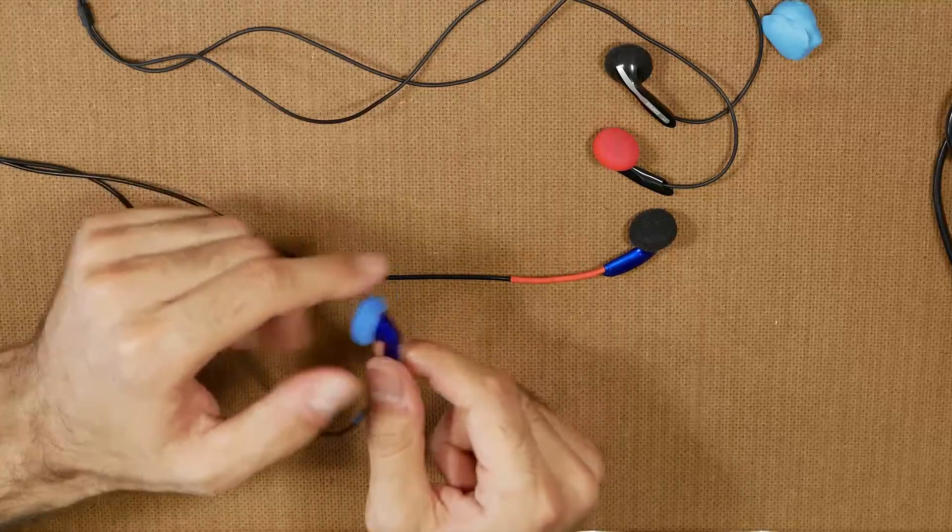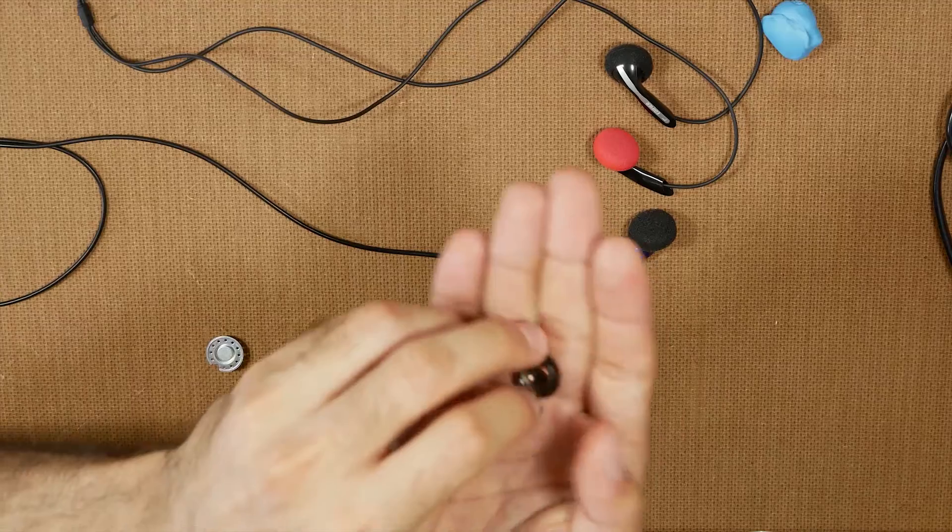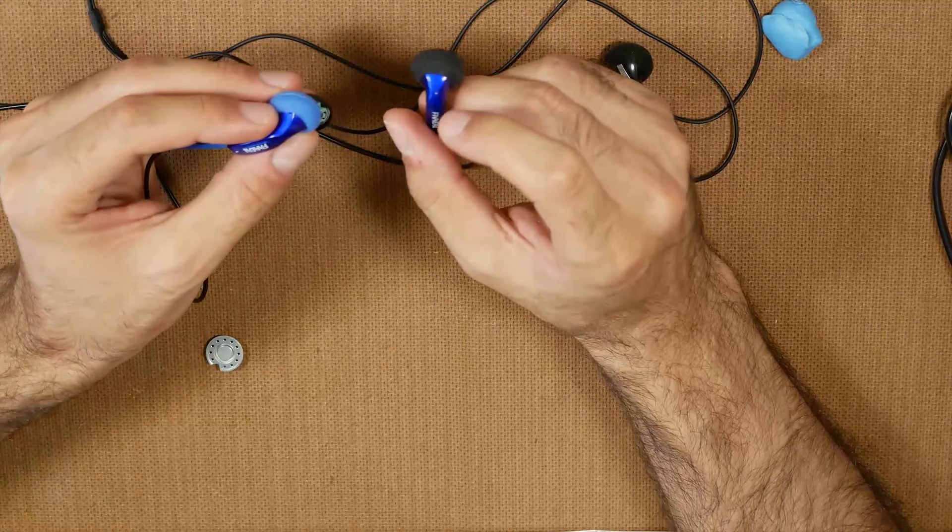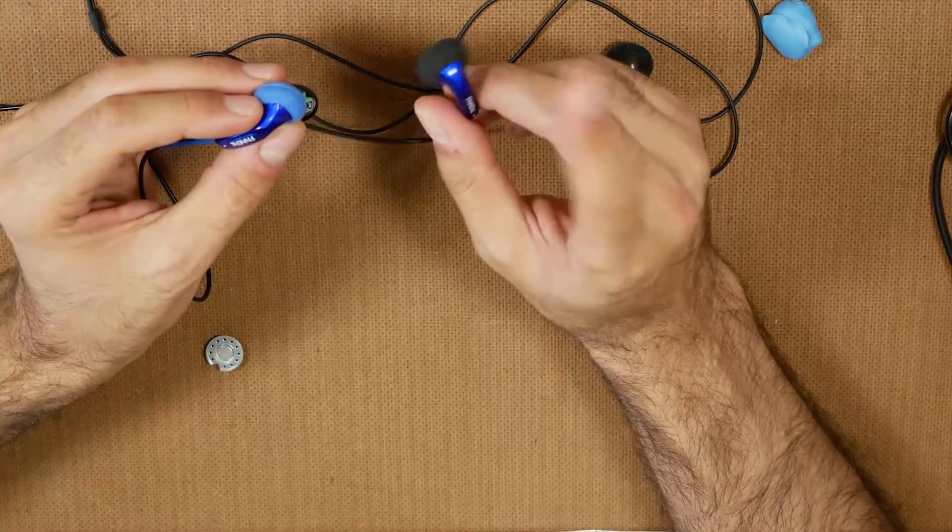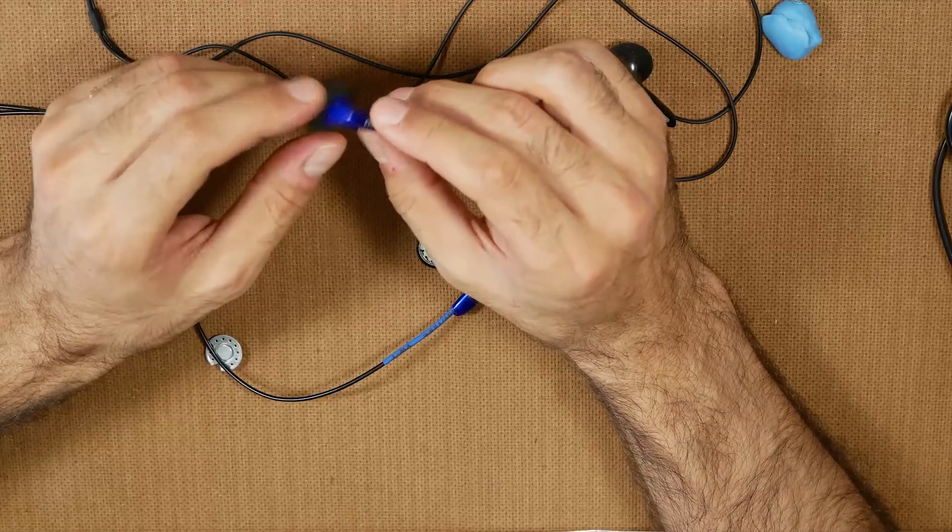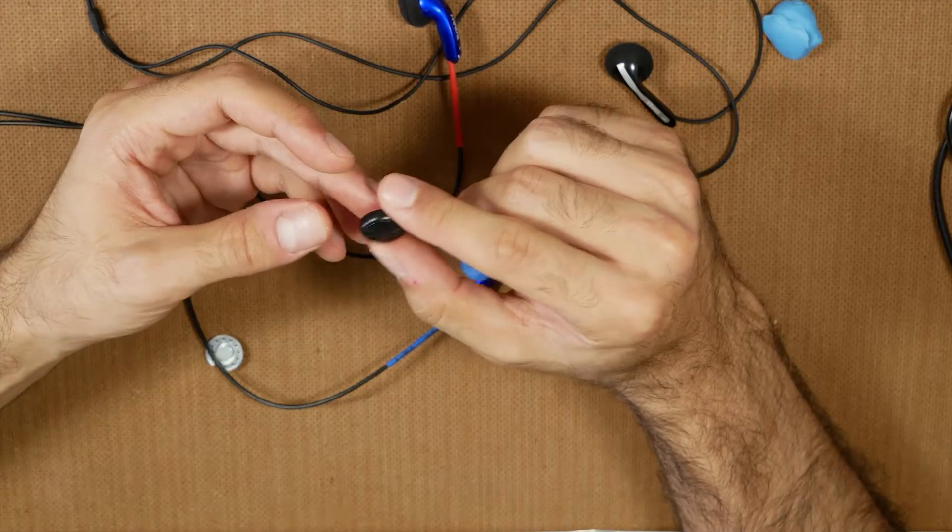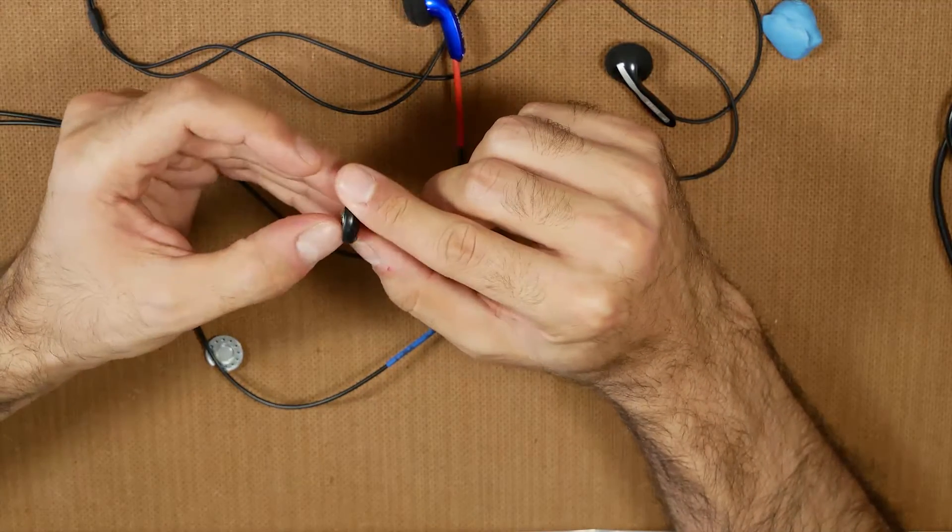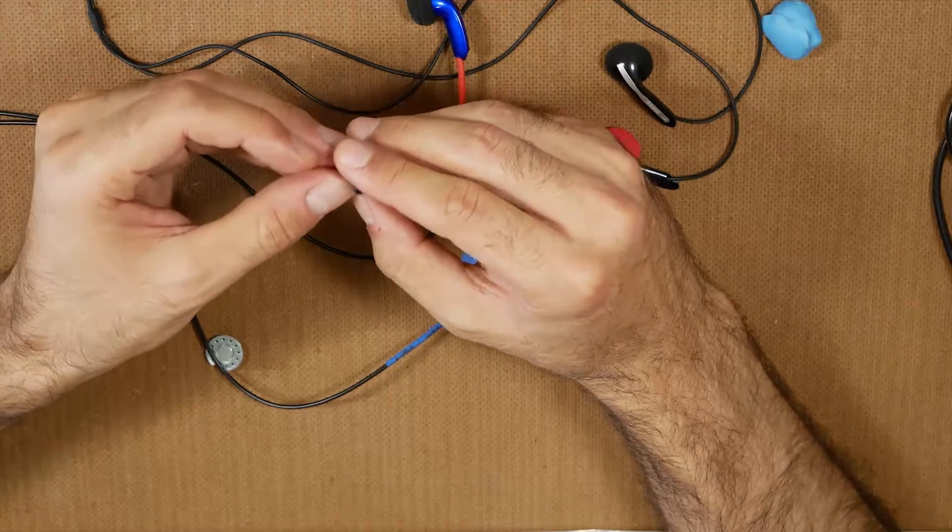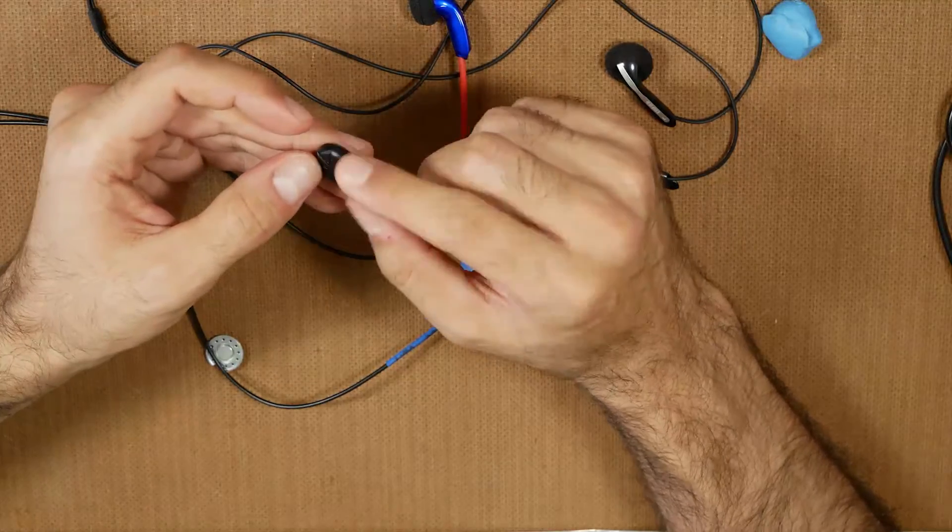Took those out from there, put them in here. And as you can see, I also added some shrink tubing, red for the right earphone and then the blue for the left earphone. As you can see, it's kind of stylish. And I'm also able to tell the difference between them. I believe it also adds to the durability of the cable, so that's an extra plus.